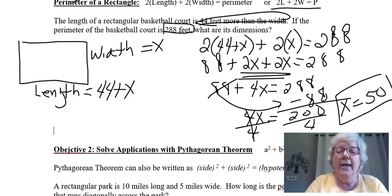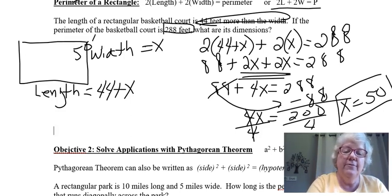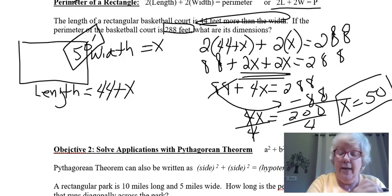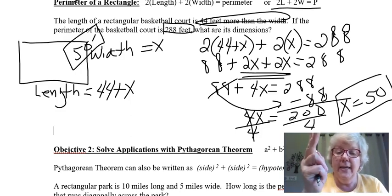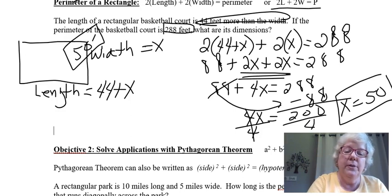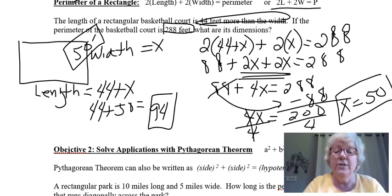Remember, x is only one dimension. x is the width. So the width of this is 50 feet. That's one of your answers. To get the second answer, you have to take your 50 and plug it into the length. So 44 plus 50 equals 94. That's the second answer, which is the length.